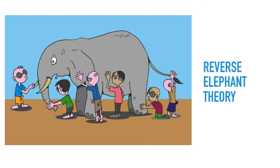I want to introduce you to the Reverse Elephant Theory — this is my own theory. If you know the elephant theory, it involves a bunch of blind people asked to describe what an elephant looks like. They touch different parts and each understands it from the part they are touching — some describe the skin, some the tusk, some the tail. To understand what an elephant really is, you have to bring all those perspectives together into one big picture.